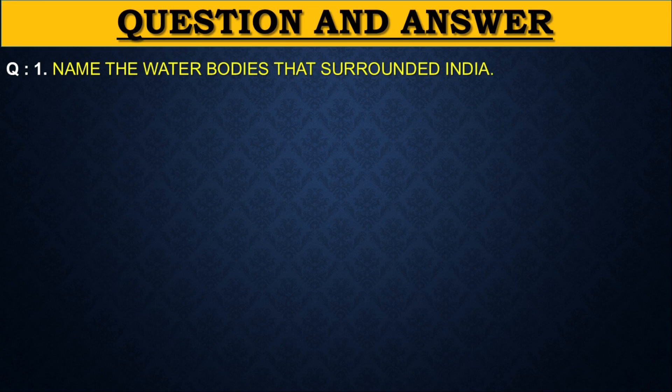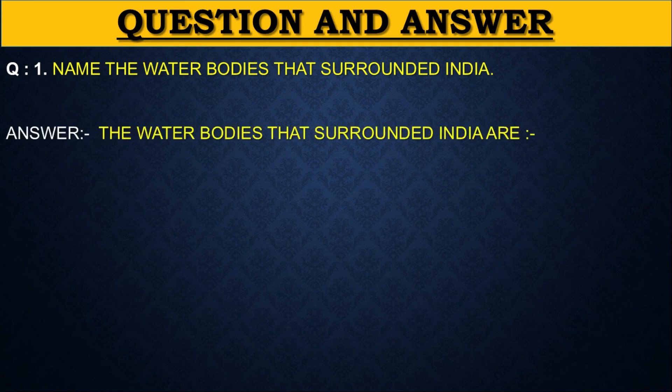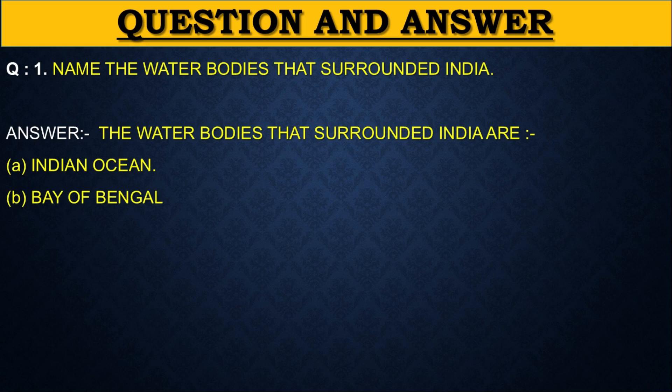Second, we will discuss question and answer of this lesson. First question: Name the water bodies that surround India. Answer: The water bodies that surround India are: first, Indian Ocean; second, Bay of Bengal; third, Arabian Sea.